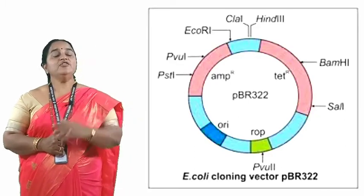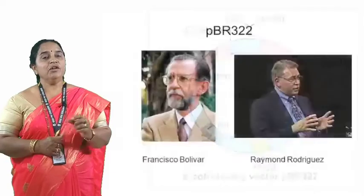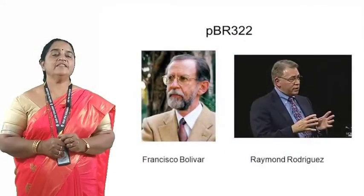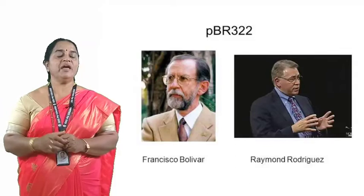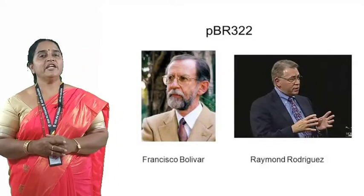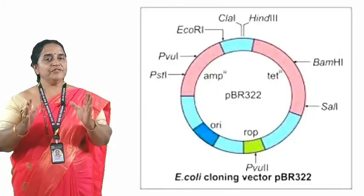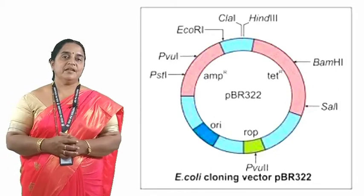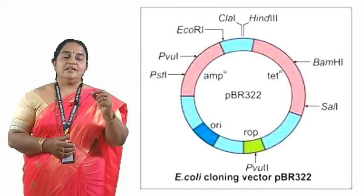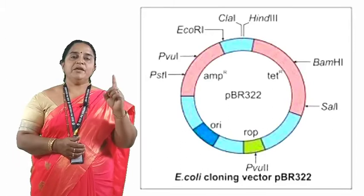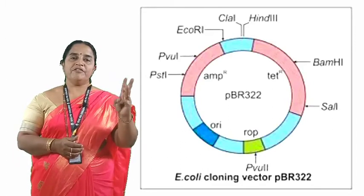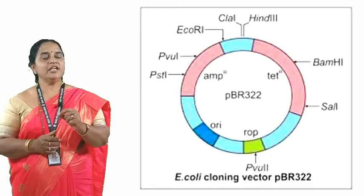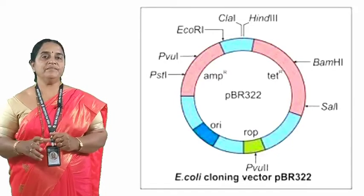Based on the abilities of natural plasmid, Bolivar and Rodricks constructed a synthetic plasmid named PBR322. The structure of this synthetic plasmid will be studied in the next session. The cloning vector may be a plasmid, cosmid, phasmid, or synthetic plasmids such as PBR322 and PUC18.